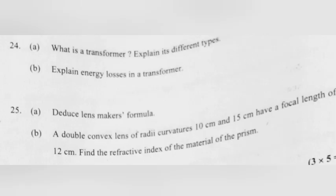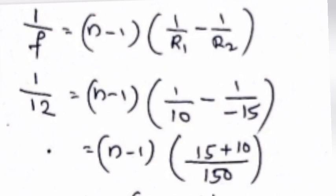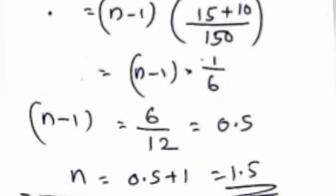A double convex lens of radii of curvature 10 cm and 15 cm has a focal length of 12 cm. Find the refractive index of the material. R1 = +10 cm, R2 = −15 cm, f = +12 cm. Using 1/f = (n−1)(1/R1 − 1/R2): 1/12 = (n−1)(1/10 + 1/15) = (n−1)(25/150) = (n−1)/6. Therefore n−1 = 6/12 = 0.5, so n = 1.5.